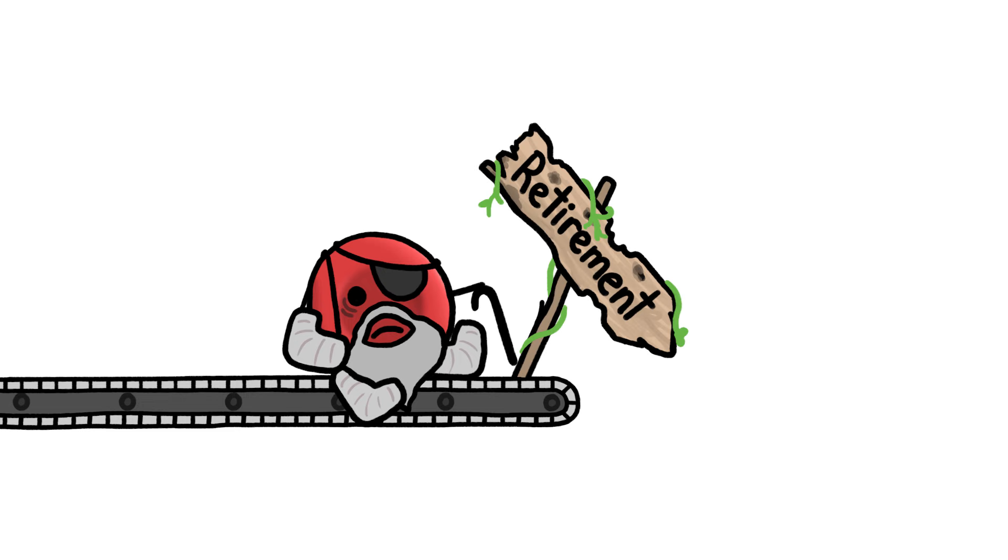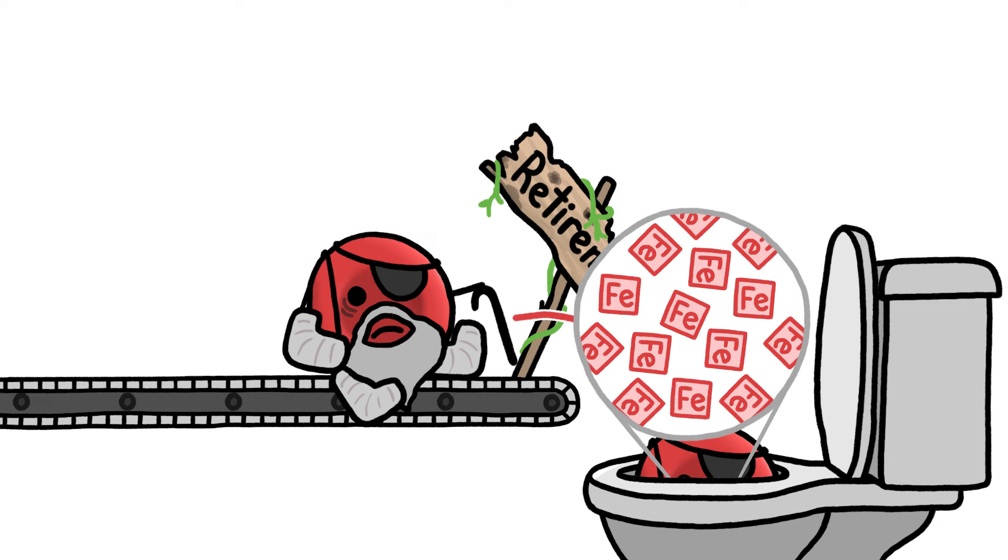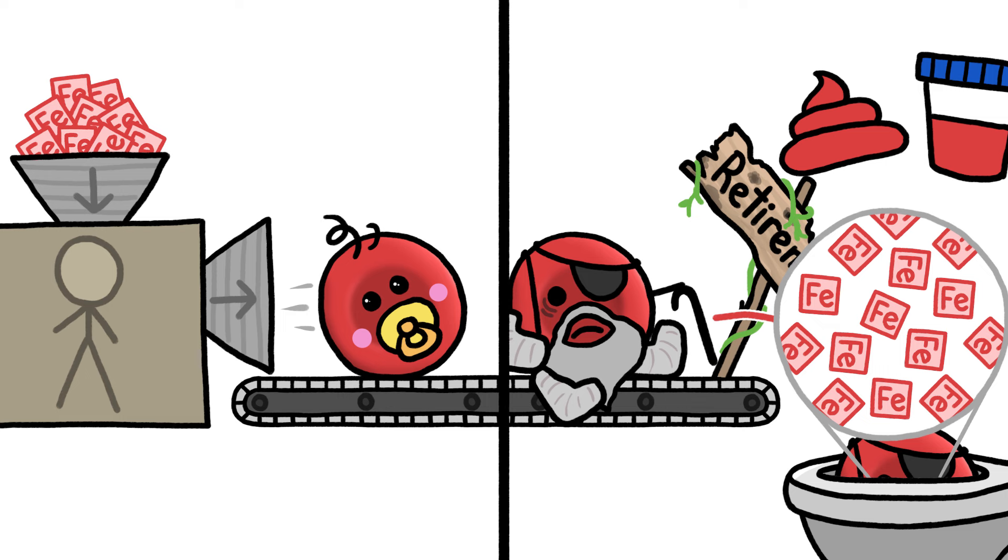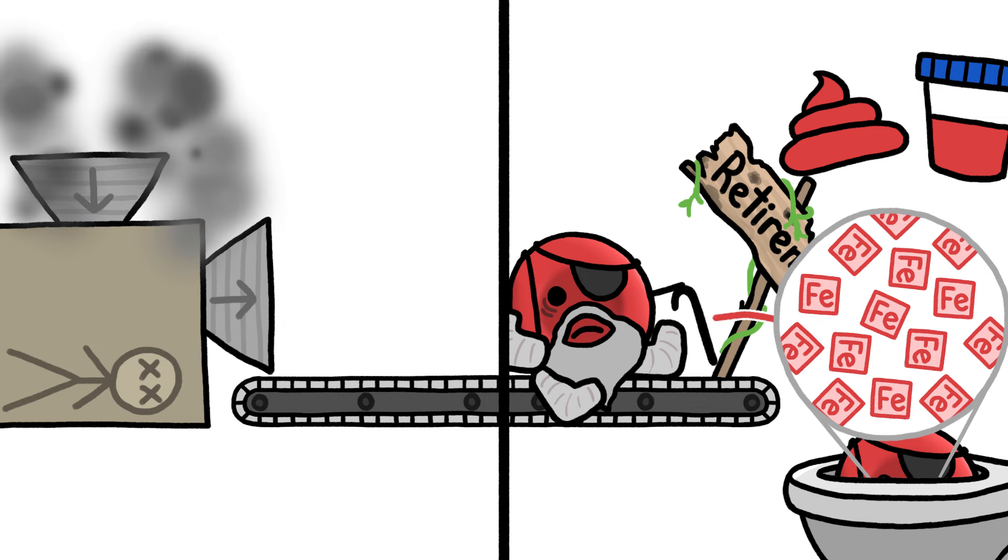If all the retiring red blood cells went straight to the toilet, and took all their oxygen-carrying iron with them, our poop and pee would be red. But our bodies would also quickly run out of iron for making new red blood cells, and we'd die.